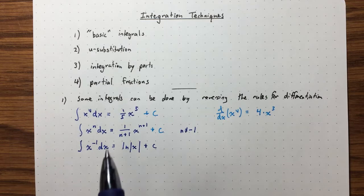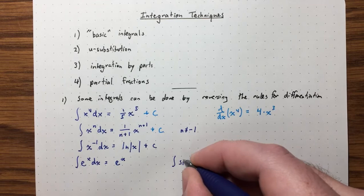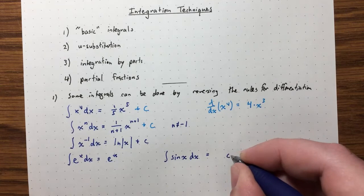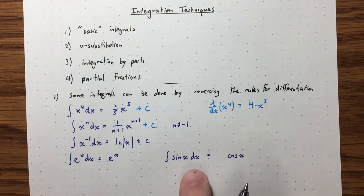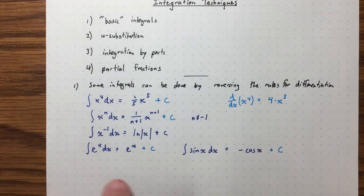What are some other basic integrals? The integral of e to the x is just e to the x. What about sine x? It's not exactly cosine x because the derivative of cosine x is minus sine x, so we need a minus sign there. These all have arbitrary constants. There are many more such integrals, including ones you can look up in a table.